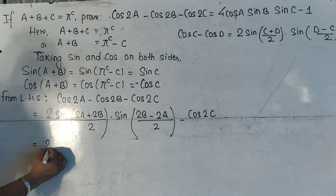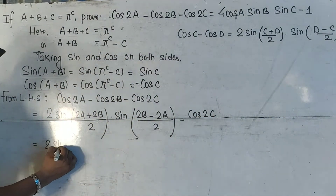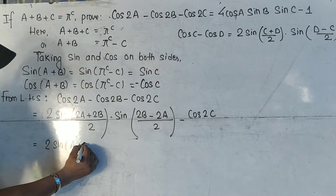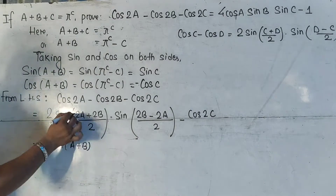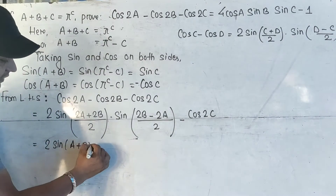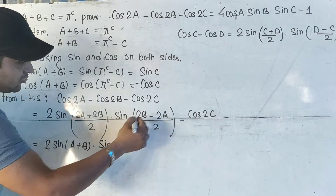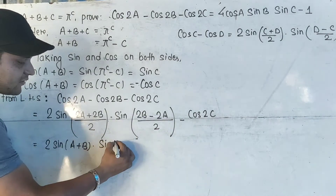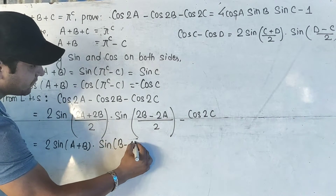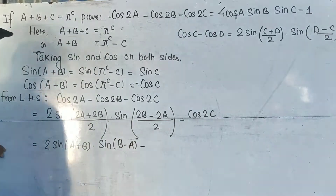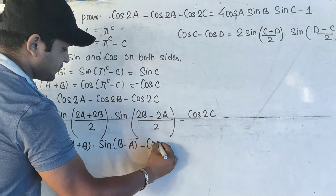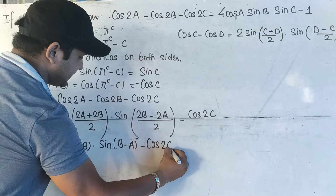Now when you simplify it, you will have here 2·sin — only (a+b) is left here. When you take 2 and cancel it, you have only (a+b) left. Dot sin — when you take 2 and cancel it, you will have here (b minus a). Now you will have here cos2C as it is.